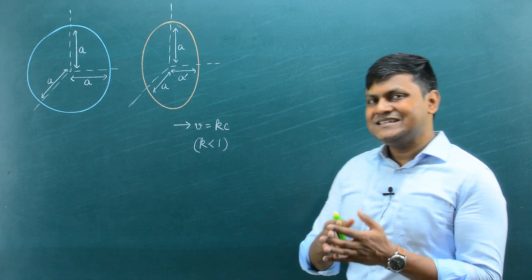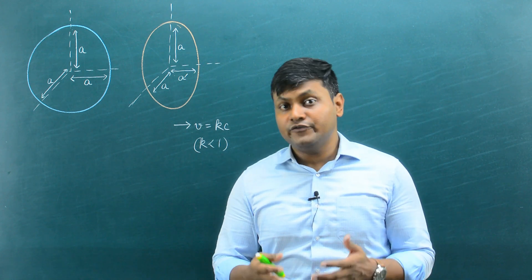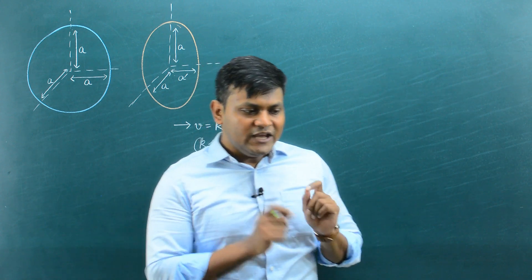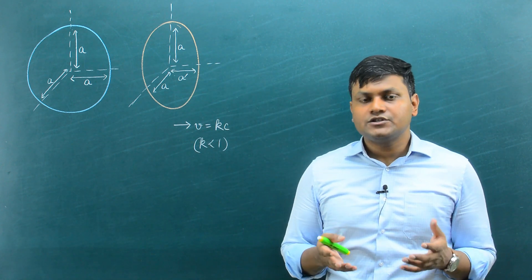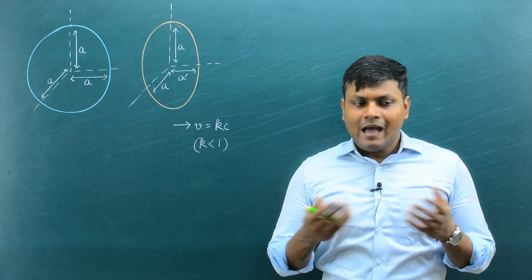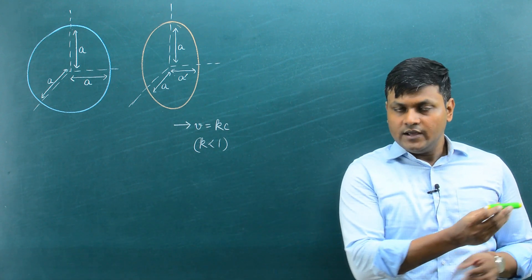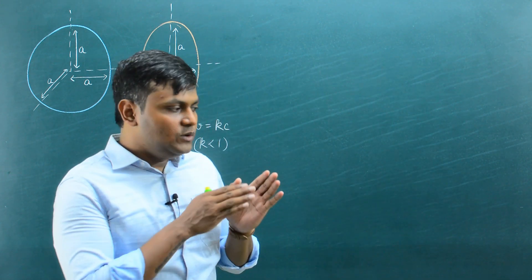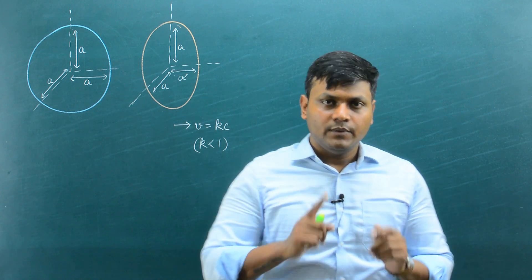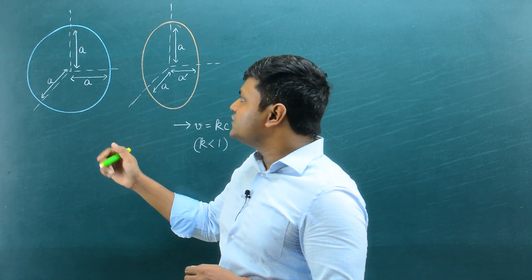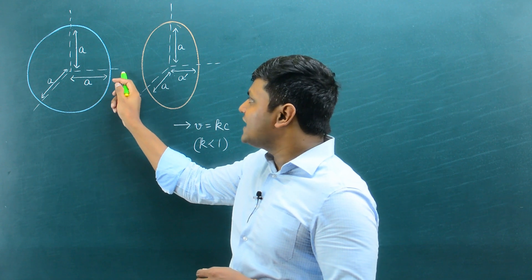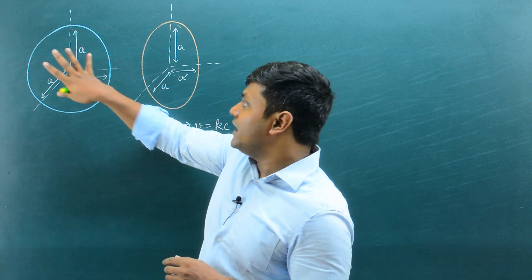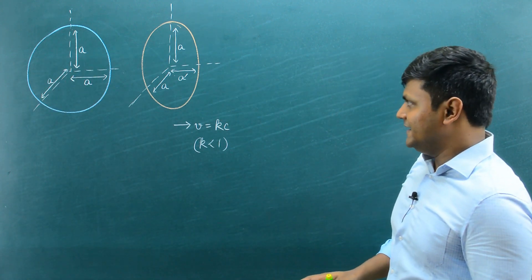One important thing to keep in mind: length contraction, or Lorentz contraction, happens only in the direction of relative motion — never in perpendicular directions. So if you look at the radius of the sphere along the x-axis, it is the same as along the y-axis or z-axis when measured by an observer at rest with respect to the sphere.